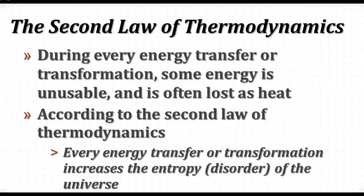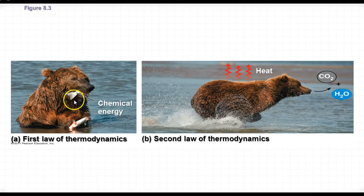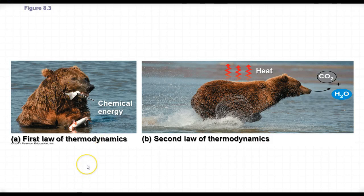The second law of thermodynamics has to do with entropy. Entropy has to do with the disorder of the universe, and the tendency is for things to go from more ordered to less ordered. When energy transformations occur, some of that energy is unusable and is often lost as heat. Here we have the bear eating the fish — he's taking in the chemical energy from the fish and transforming it into various kinds of energy within his body: chemical energy, kinetic energy from movement, and potential energy found in molecules.